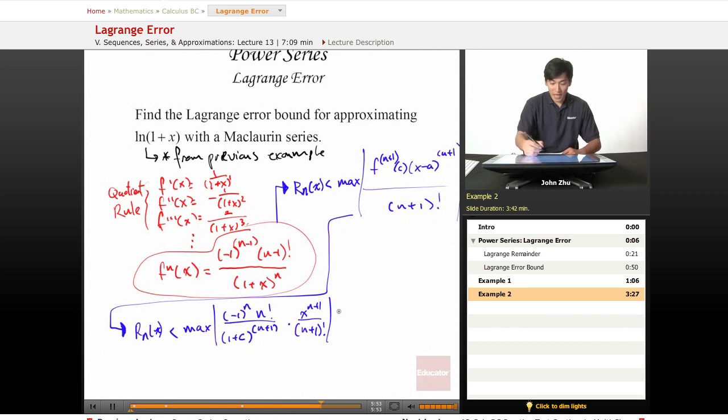We have this n! and (n+1)! term that we can simplify. Our error bound now is defined by the max value of (-1)^n times x^(n+1) all over (1+c)^(n+1) times (n+1).